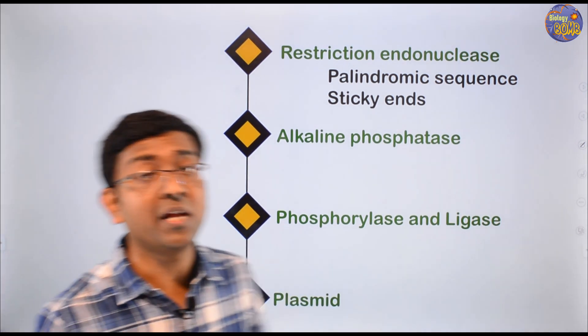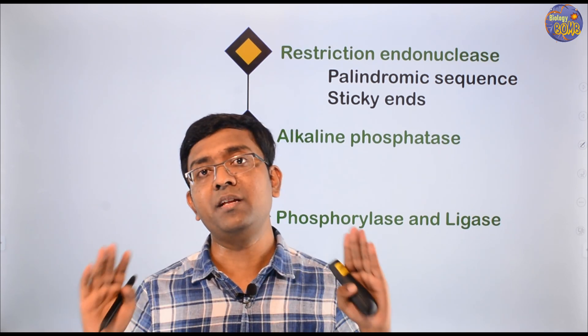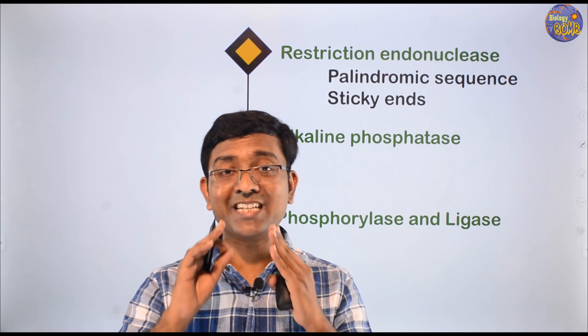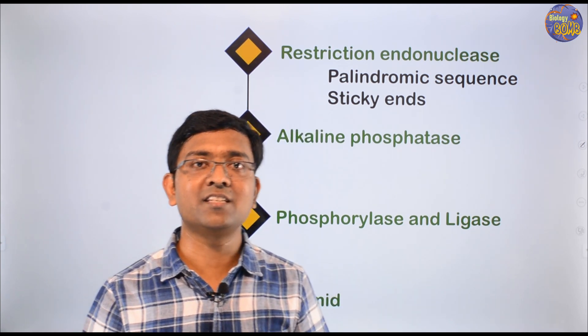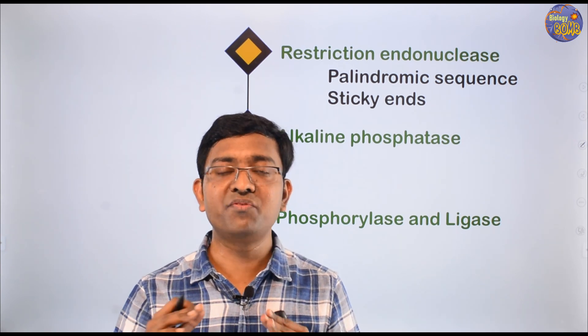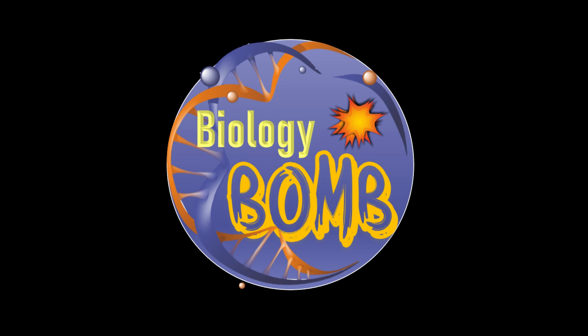To summarize: plasmid acts as a vector; plasmids are used for defense mechanism in bacteria; the virus which infects bacteria is called bacteriophage. That's all for this tutorial — we have covered biotechnology using enzymes. In the next tutorial we will see the different types of vectors. Thank you so much guys.